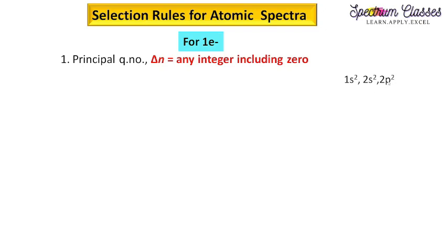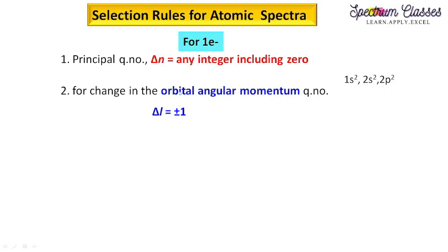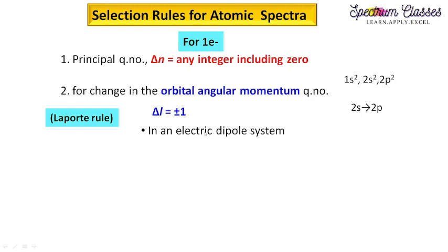In the case of alkali metal spectra, we can have this type of transition. The second selection rule concerns the change in the orbital angular momentum quantum number. There must be a change in the orbital angular momentum quantum number; that is, delta l must be equal to plus or minus 1. This is also known as the Laporte rule, and this is considered for an electric dipole system.